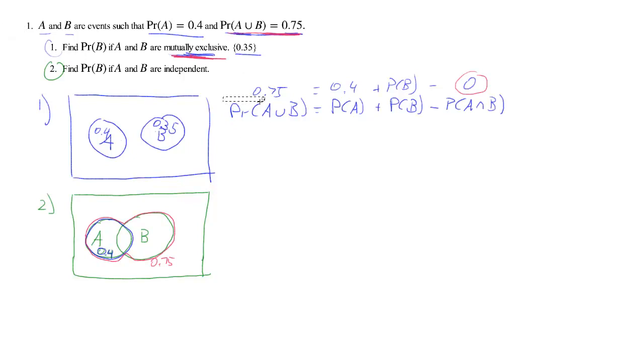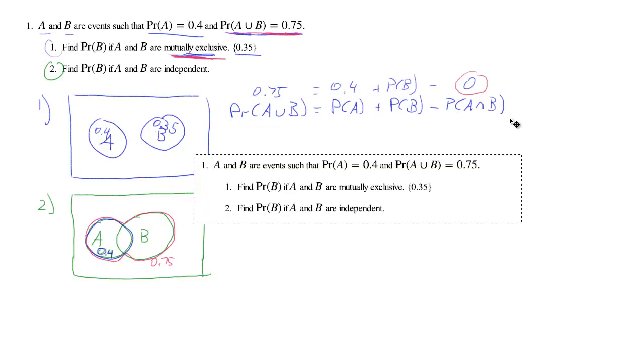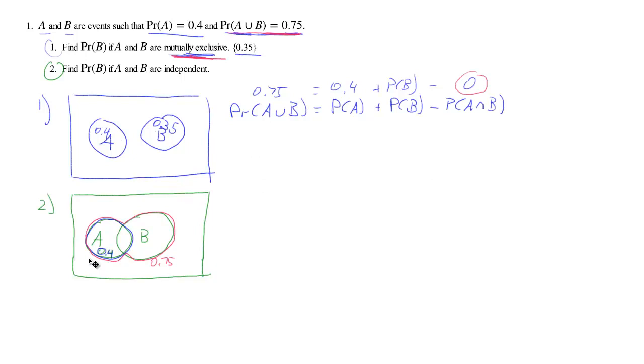We'll start with this relationship again. So what we had before, we'll start with exactly that one again. Let's write it again. So we have the probability of A or B is equal to the probability of A plus the probability of B minus the probability of A and B.